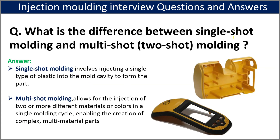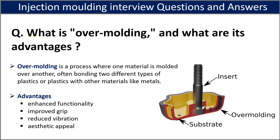The next question is: what is the difference between single-shot molding and multi-shot molding? Single-shot molding involves injecting a single type of material into the mold cavity to form the part. Multi-shot molding allows the injection of two or more different materials or colors in a single molding cycle, enabling the creation of complex, multi-material parts. This is generally called over-molding.